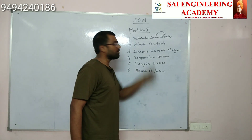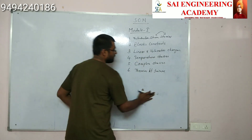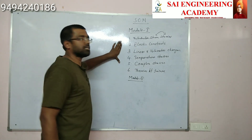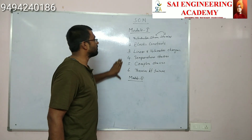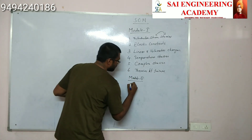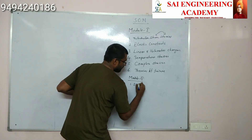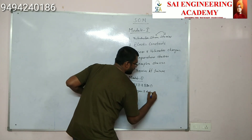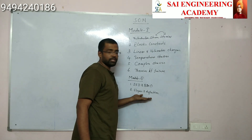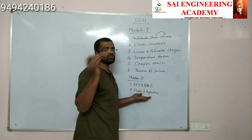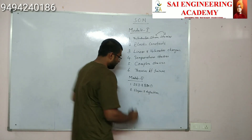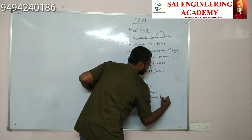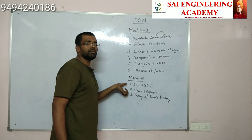Let us discuss all the modules briefly — we will talk about every chapter, its weightage, and important things. Module 2 is kept short but covers highly important topics: shear force diagram and bending moment diagram, and slopes and deflection. Even if slopes and deflection is not explicitly written in the SOM syllabus, it appears in structures, so you cannot afford to skip this topic. Module 2 has 3 chapters, but 3 highly important ones.